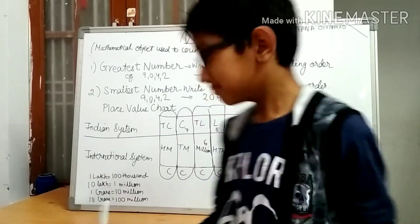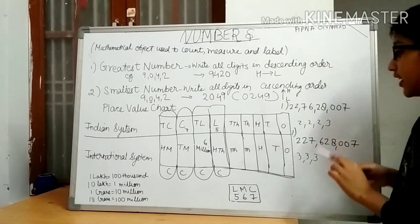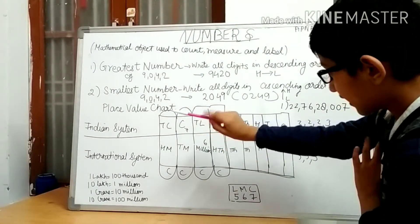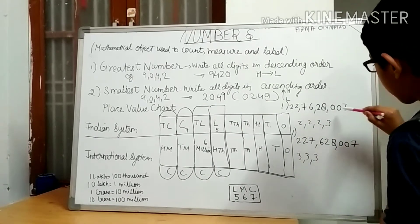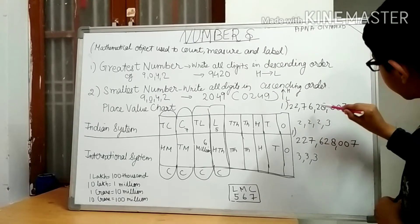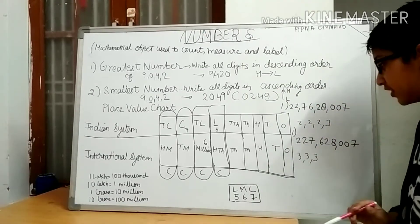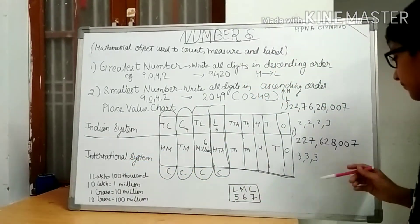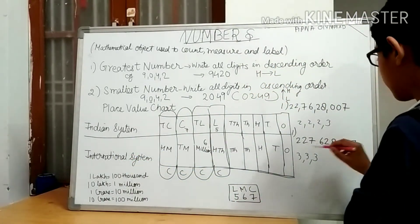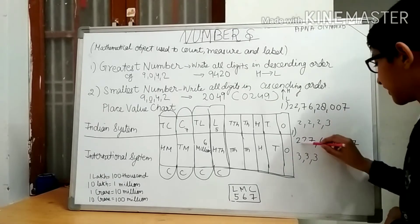In period of Indian system we have to write first three digits, then comma, then two digits, then comma, then two digits. In international system we write three digits comma, three digits comma, three digits.